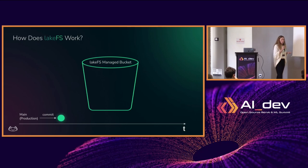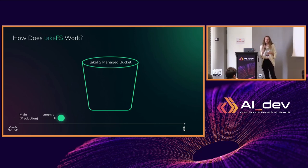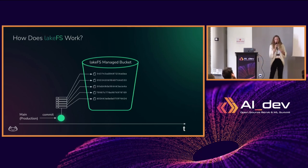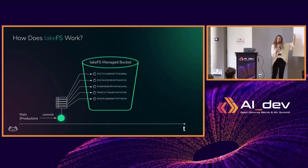How does it work? One solution people use is copying data — but a data version control system, not just this one but any you'd use, does not copy data. It provides a layer of metadata — pointers to your data — that creates an abstraction of commits and branches. At the beginning, you bring your data into the system — not by copying, but by creating pointers to data you already have. That's the import command. Now you've listed everything you'd like to version-control.